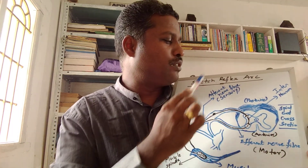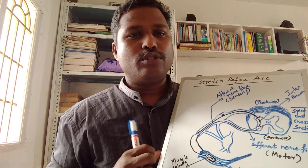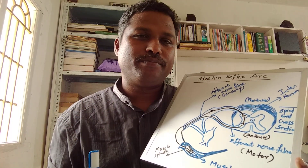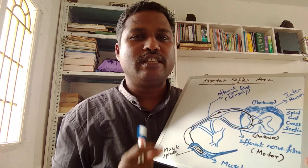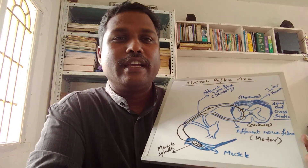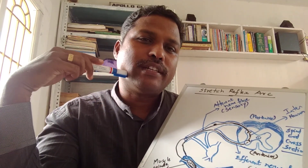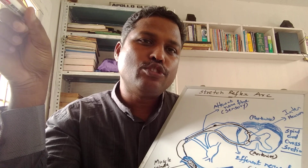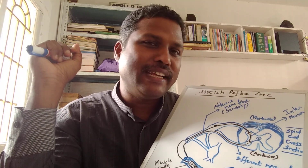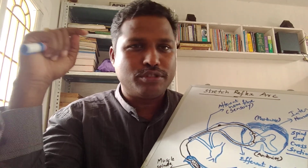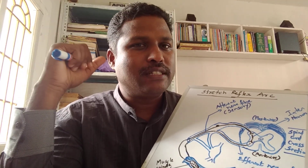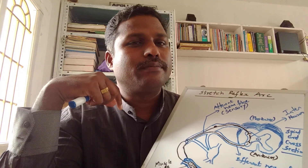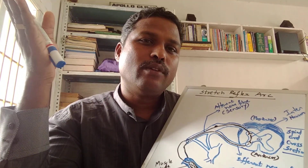This stretch reflex arc represents a very important physiological phenomenon. The stretch reflex mechanism is constantly taking place in our anti-gravity muscles. Anti-gravity muscles are the muscles responsible for maintaining the standing erect posture — they work constantly against gravitational force. For example, in the lower limb, all the hip extensors are anti-gravity muscles. If these muscles are not working while standing, the hip will flex and we will fall down.